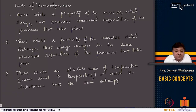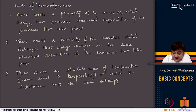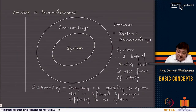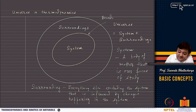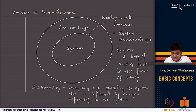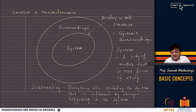The first law is the principle of conservation of energy. Energy is a property of the universe that remains conserved regardless of the processes that take place within the universe. Between the system and surroundings there is a wall or boundary, which is very important. This boundary separates the system from the surroundings, and across the boundary you can have energy transfer — heat transfer, mechanical work transfer, or chemical work transfer.